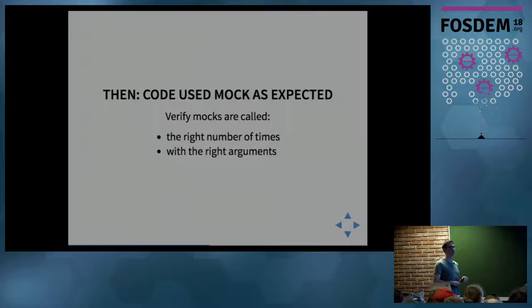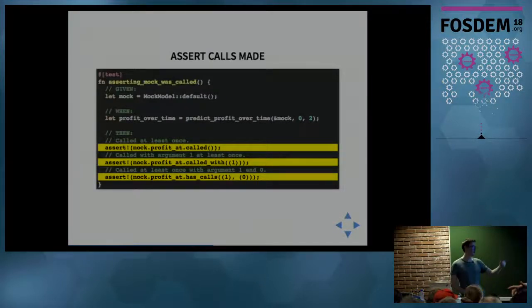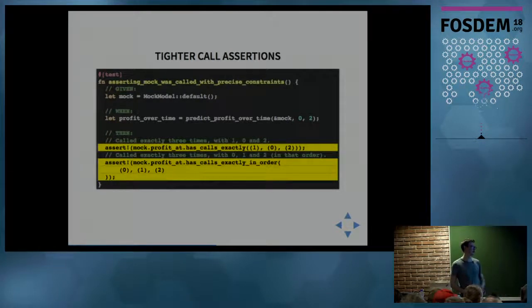Once you've configured the mock and how it's supposed to behave, you want to assert that it was used as expected - it was called the right number of times with the right arguments. There's fairly loose assertions, so you can say the mock was called at least once, it was called with one, or it was called with timestamp one and also timestamp zero.